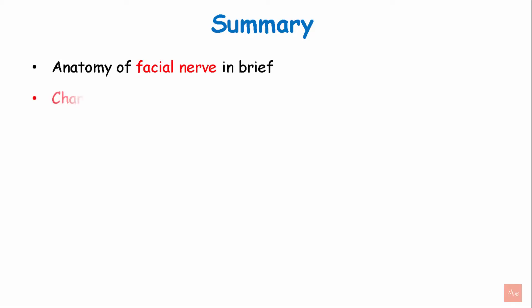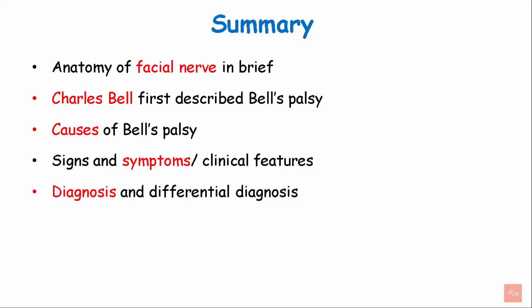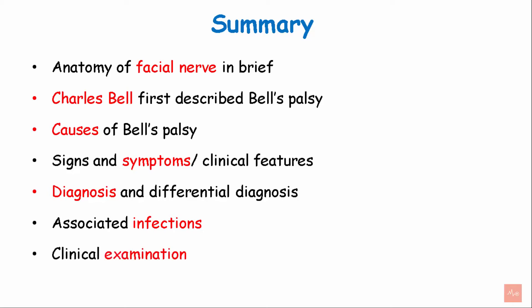To summarize: we learnt the anatomy of the facial nerve, its causes — mostly damage to the facial nerve — the signs, symptoms, and clinical features affecting the unilateral face, diagnosis and differential diagnosis, its association with bacterial and viral infections, clinical examination, and treatment.